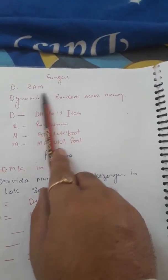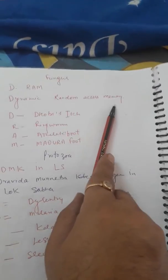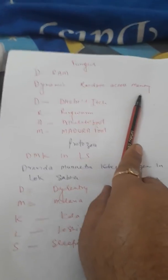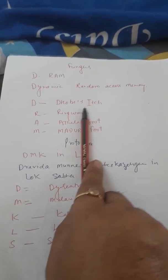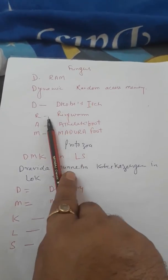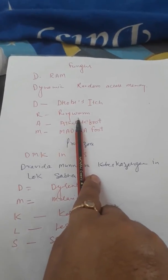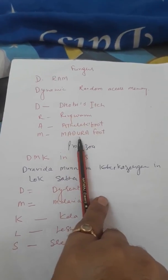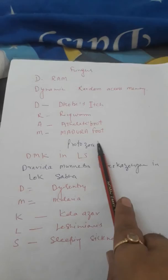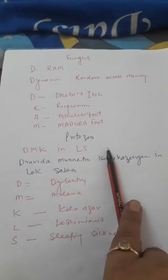Fungal disease what is that? DRAM. DRAM is Dynamic Random Access Memory, computer mein term use. D for Dabeech, this disease caused by fungus. R for Ringworm. A for Athlete's foot disease. M for Madura foot. Now we are talking about Protozoan disease.